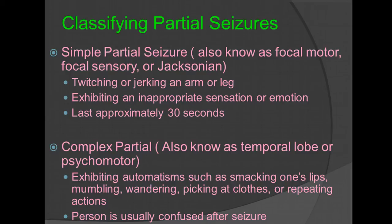Classifying partial seizures: simple partial seizures, also known as focal motor, focal sensory, or Jacksonian, include twitching or jerking of an arm or a leg, exhibiting an inappropriate sensation or emotion. These will typically last for 30 seconds. Complex partial, also known as temporal lobe or psychomotor, will exhibit automatisms such as smacking one's lips, mumbling, wandering, picking at clothes, or repeating actions. The person is usually confused after the seizure.